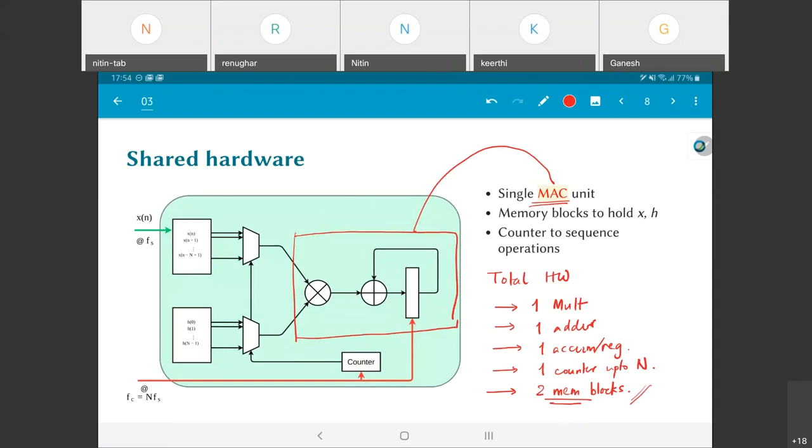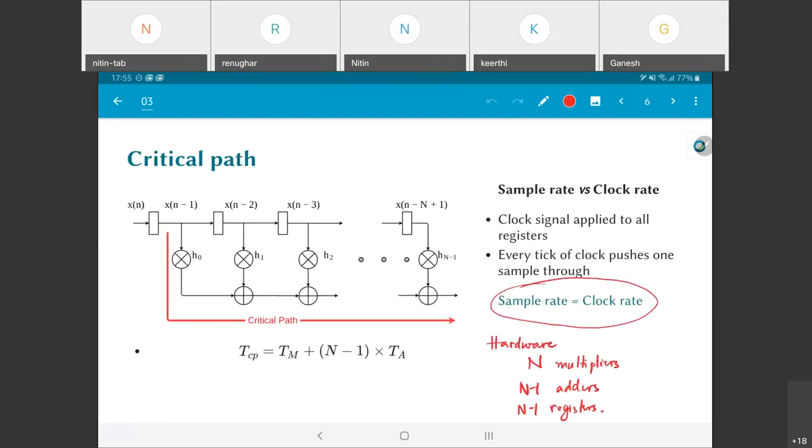Which means that in terms of my hardware, all that I am left with is one multiplier, one adder, one register, and a small counter. The counter need not be very large; if capital N is 20, then you will need a 5-bit counter or something like that. It is a very small piece of hardware, which means potentially this shared hardware I could end up using much less total hardware than is required for my original design which needed capital N of each of these units.